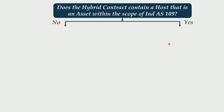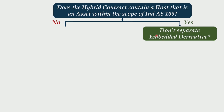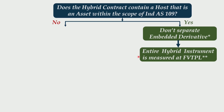If the answer is yes, we would say: don't separate the embedded derivative from the host contract. And if you don't separate the embedded derivative from the host contract, obviously what you are going to do is put the entire hybrid instrument as measured at FVTPL — that is, fair value through profit or loss. This is to be done when the host contract is a financial asset, in other words, when the host contract is an asset within the scope of Ind AS 109.